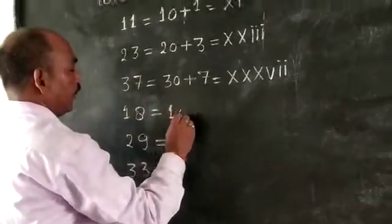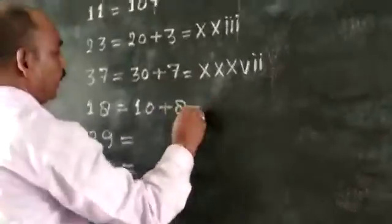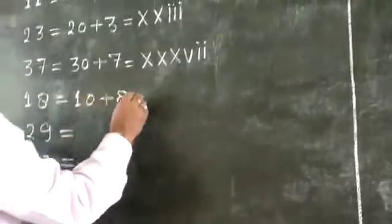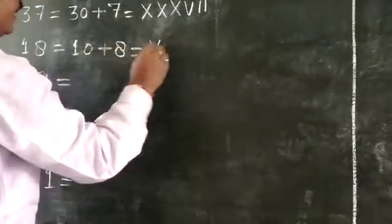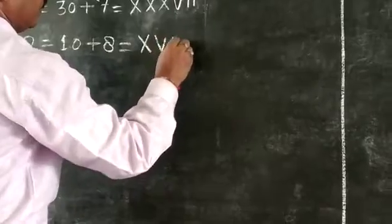Next, 18: 10 plus 8. Roman numeral of 10 is X and 8 is VIII, so XVIII.